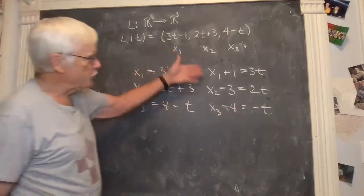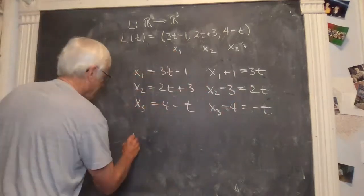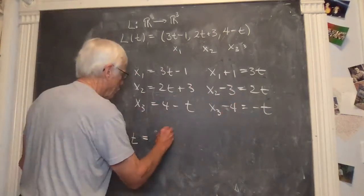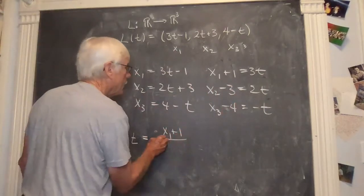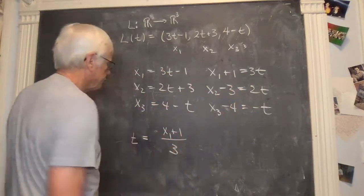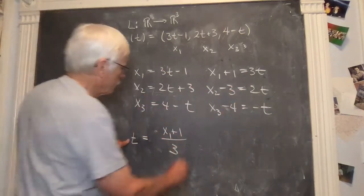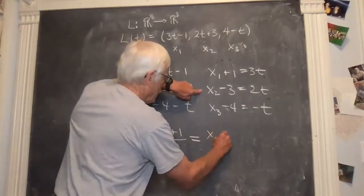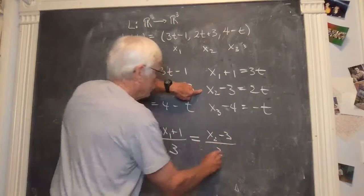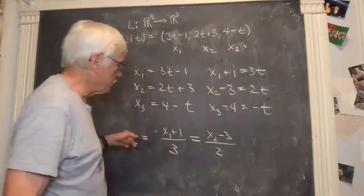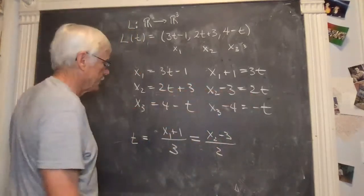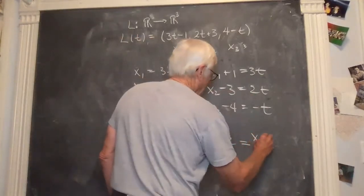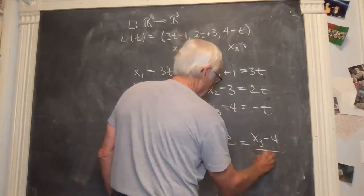So the first one is x1 plus 1 is 3t. The second one tells you that x2 minus 3 is 2t. And the third one tells you that x3 minus 4 is minus t. And now we can solve each of these for t.